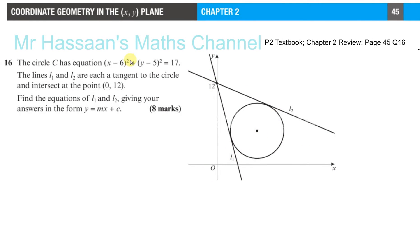Question number 16 from the P2 textbook, chapter 2 review, page 45. This is an important question. The circle C has equation (x - 6)² + (y - 5)² = 17. The lines L₁ and L₂ are each a tangent to the circle and intersect at the point (0, 12). Find the equations of L₁ and L₂, giving your answers in the form y = mx + c.